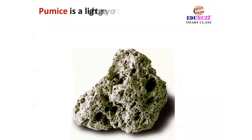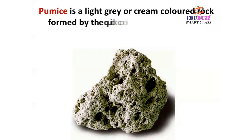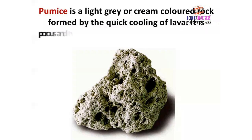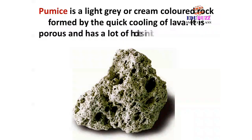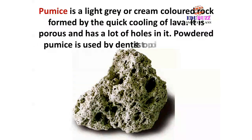Pumice is a light grey or cream colored rock formed by the quick cooling of lava. It is porous and has a lot of holes in it. Powdered pumice is used by dentists to polish teeth.